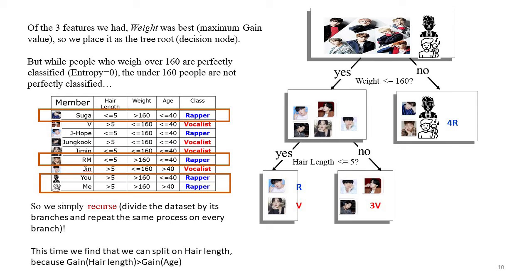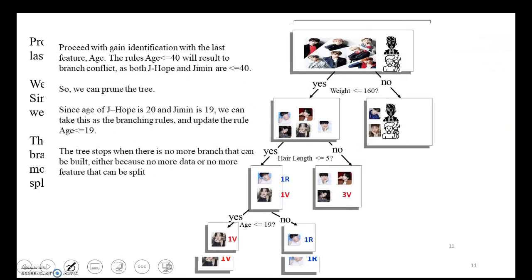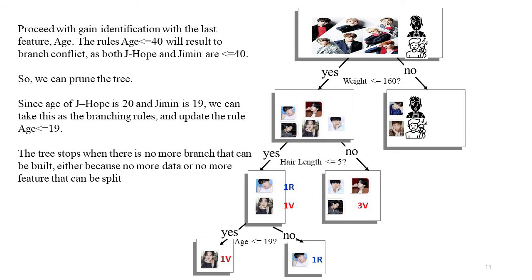From there, we further identify how many members comply with that condition and identify what the next split should be. This is a recursive activity. We then find the split using hair length, and proceed with gain identification for the age feature. When handling age, we decide a bin size — since J-Hope is 20 and the minimum is 19, we take this as the branching rule, leaving us with this tree.